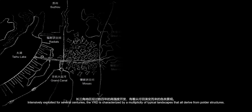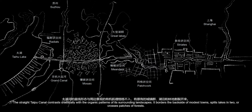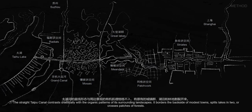Intensively exploited for several centuries, the Yangtze River Delta is characterized by a multiplicity of typical landscapes that all derive from polder structures. The straight type of canal contrasts drastically with the organic pattern of its surrounding landscapes. It borders the backside of a land tongue, split and linked in two, across patches of forests.